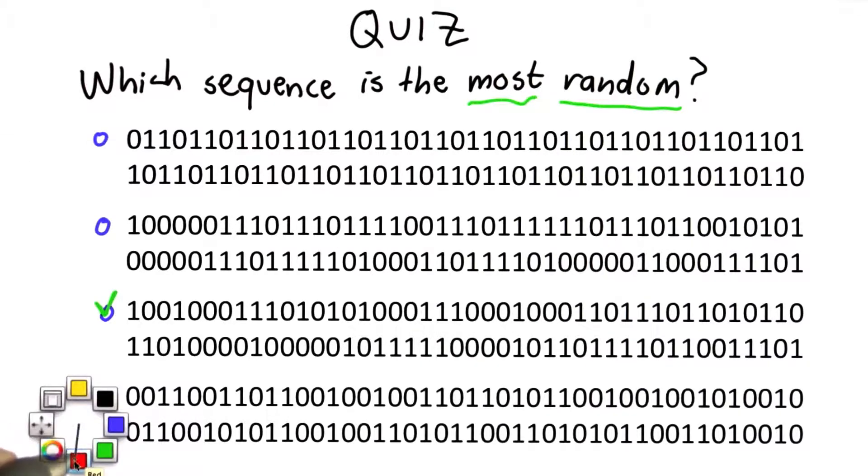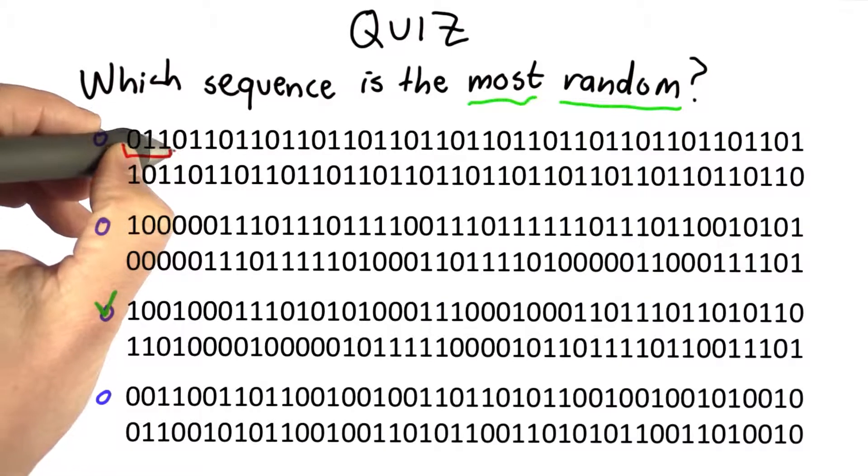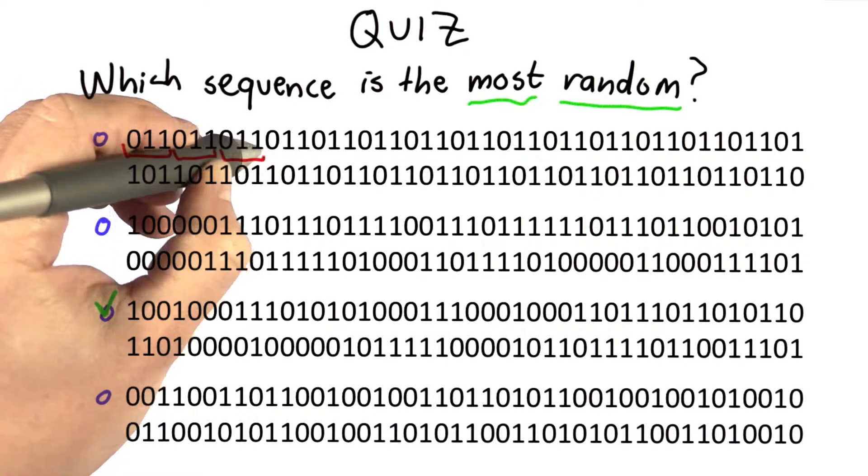If you look at the first one, you see there's a sequence of 0, 1, 1, 0, 1, 1 that keeps repeating.